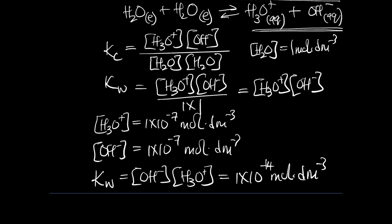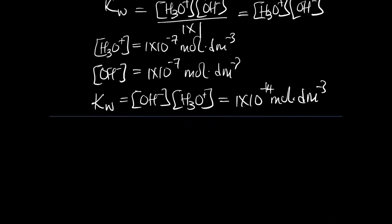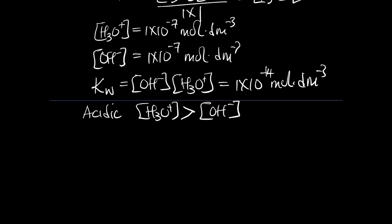Now let's look at what it means if your solution is acidic. If the solution is acidic, that means the concentration of hydronium ion is greater than the concentration of hydroxide ion. When we talk about the hydronium ion, we are referring to an acid, and when we talk about hydroxide, we are referring to a base.